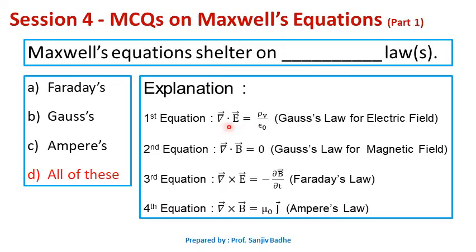Maxwell's first equation, divergence of E bar equals rho_V by epsilon naught, where rho_V is charge density, is based on Gauss's law for electric field. Second equation, divergence of B bar equals 0, is based on Gauss's law for magnetic field. Third equation, curl of E bar equals minus del B bar by del t, is based on Faraday's law. Fourth equation, curl of B bar equals mu naught J bar, is based on Ampere's law. So, all of these is the correct option.